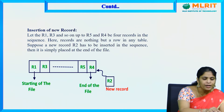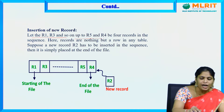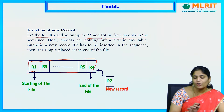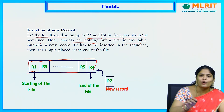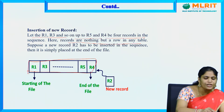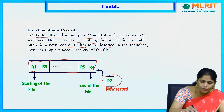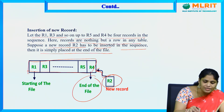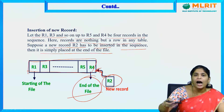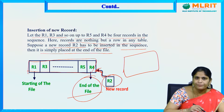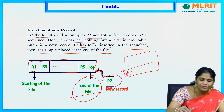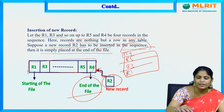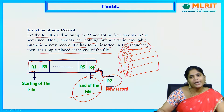Suppose a new record R2 has to be inserted. To be inserted in a sequence, it is simply placed at the end of the file. The end of the file here is after R4 — so R2 will be placed after R4 only. In a sequential manner: first R1 is inserted, then R3, then R5, then R4, and when R2 is inserted it goes after R4. That is how new records are added in pile file organization.